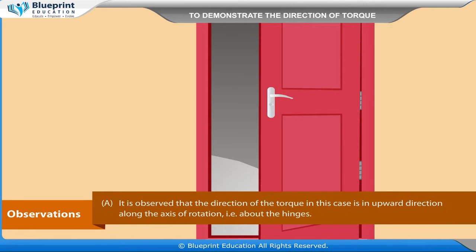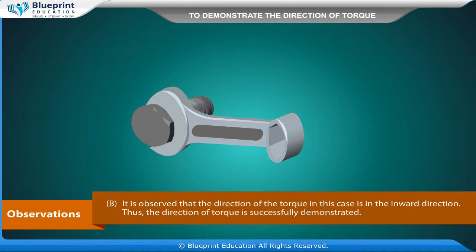Observations: It is observed that the direction of torque in the door case is in the upward direction along the axis of rotation, that is, about the hinges. It is observed that the direction of torque in the wrench-and-bolt case is in the inward direction. Thus, the direction of torque is successfully demonstrated.